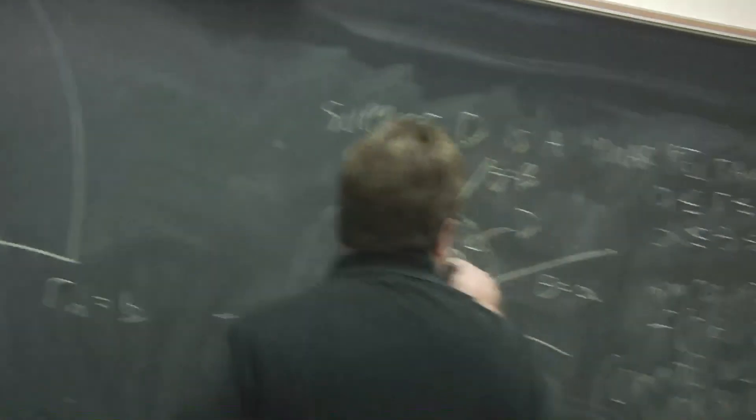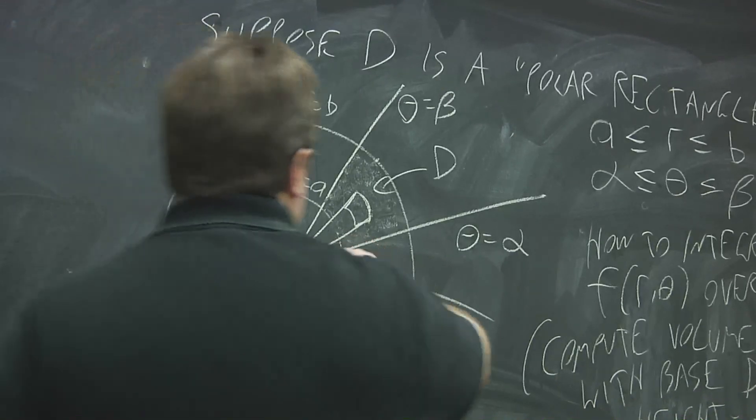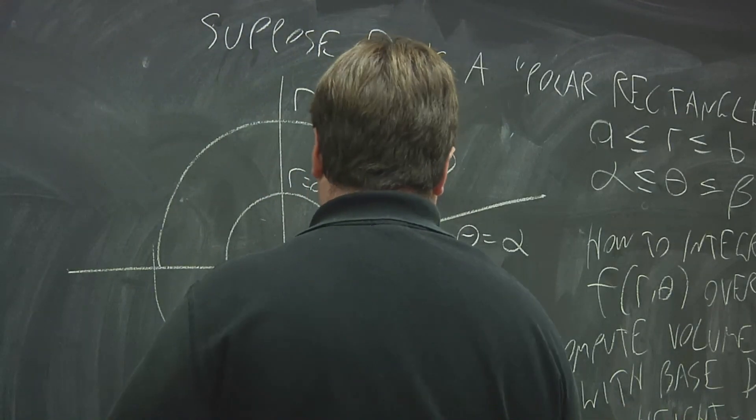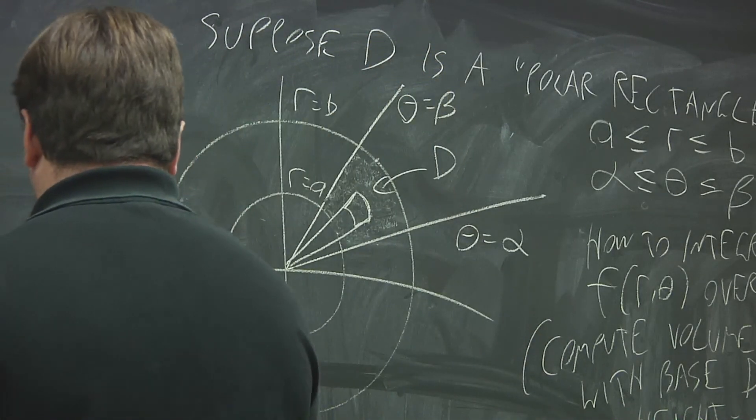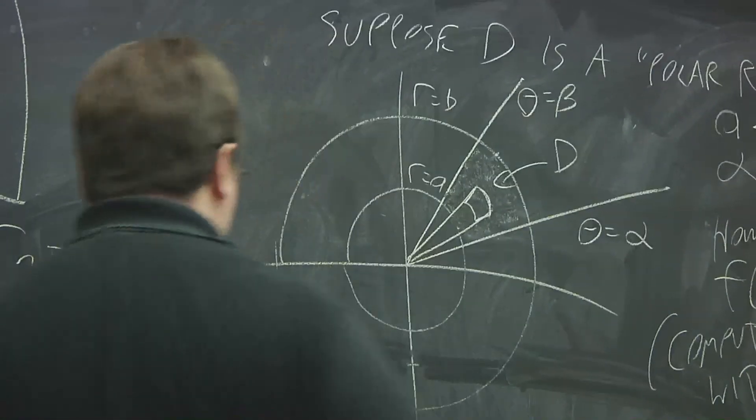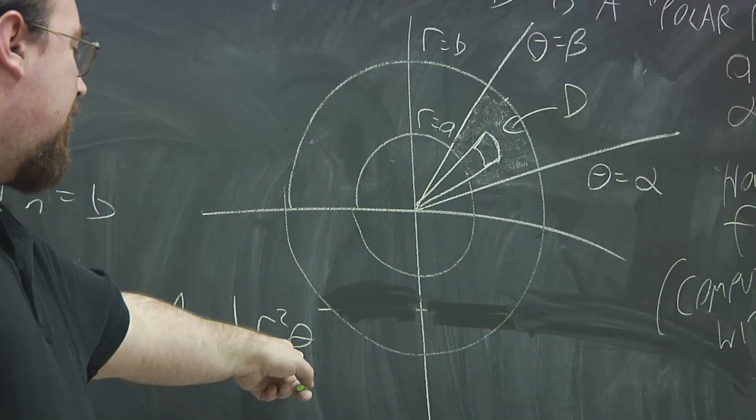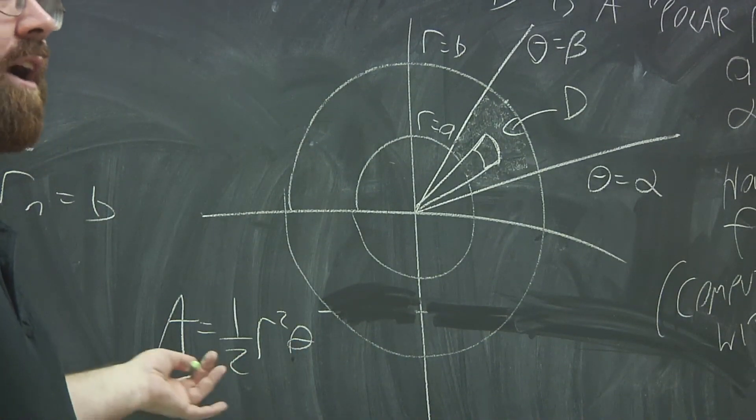So to get this area right here, what you'll do is you'll compute the area of this entire circular sector. So if you use this formula, A is one half r squared theta, which comes from the area formula for the area of the circle, because if theta was two pi for the whole circle, you get the familiar pi r squared.